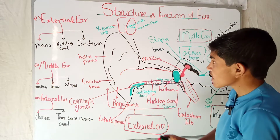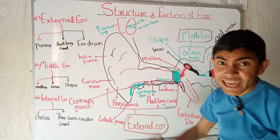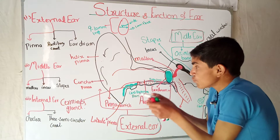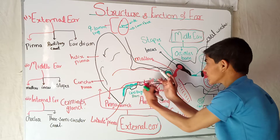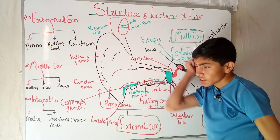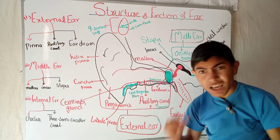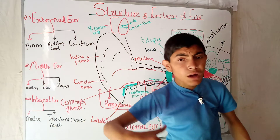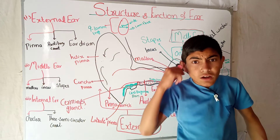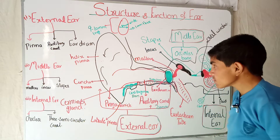The pinna can be divided into several parts. This part is called the helix pinna. This part is called the concha pinna - this is the point from where the outer canal starts and where sound is directed toward the middle ear. This lower part is called the lobule of the pinna. Some people's lobule is attached to the face while others have a detached lobule.